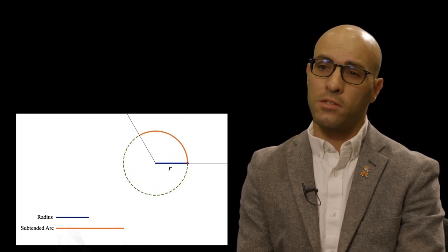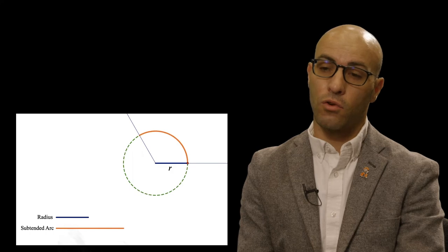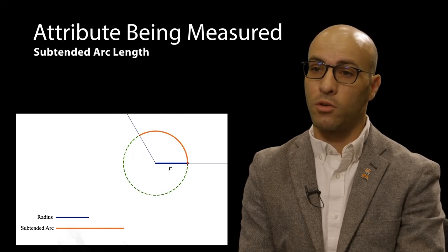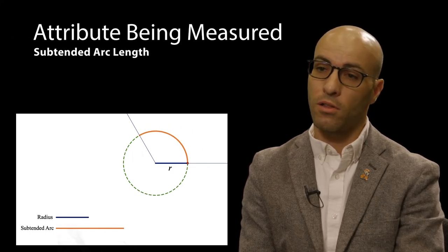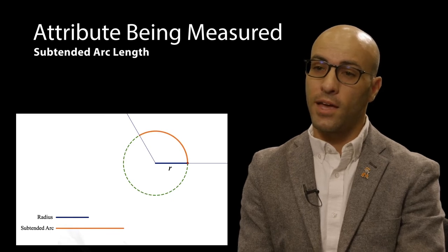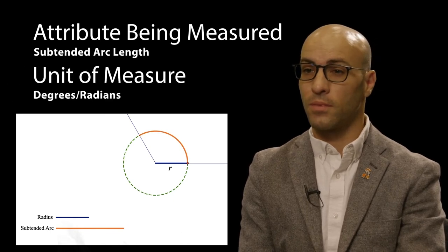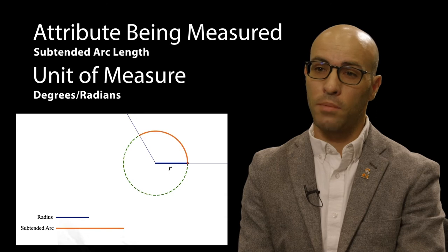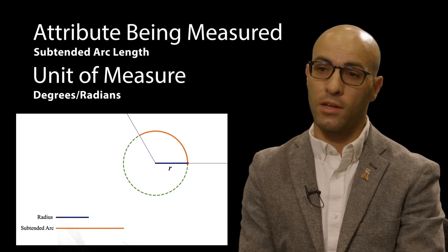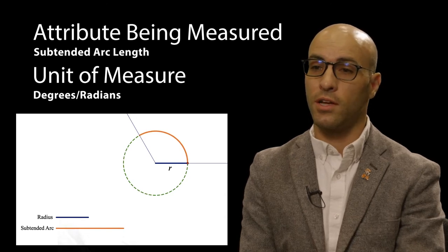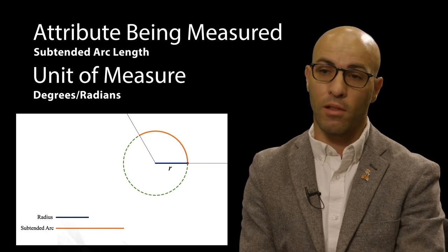Notice that these interpretations of angle measure in degrees and radians both identify the same attribute being measured, subtended arc length, and they identify a unit of measure. I mention angle measure simply to highlight the role of quantitative reasoning in constructing a meaningful understanding of even a basic mathematical idea.